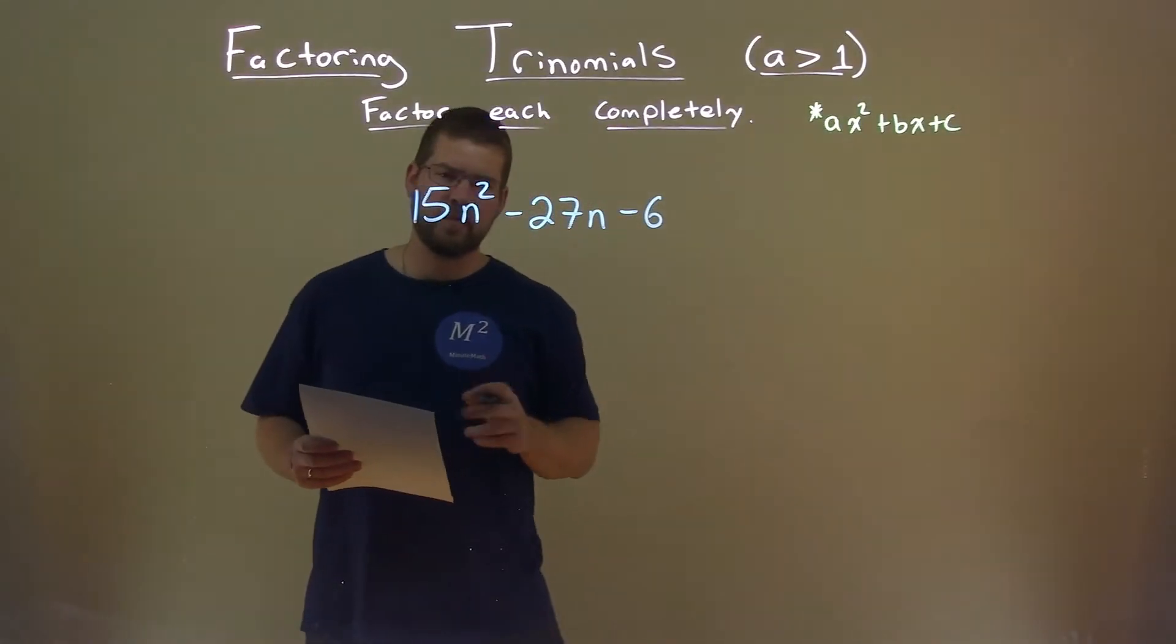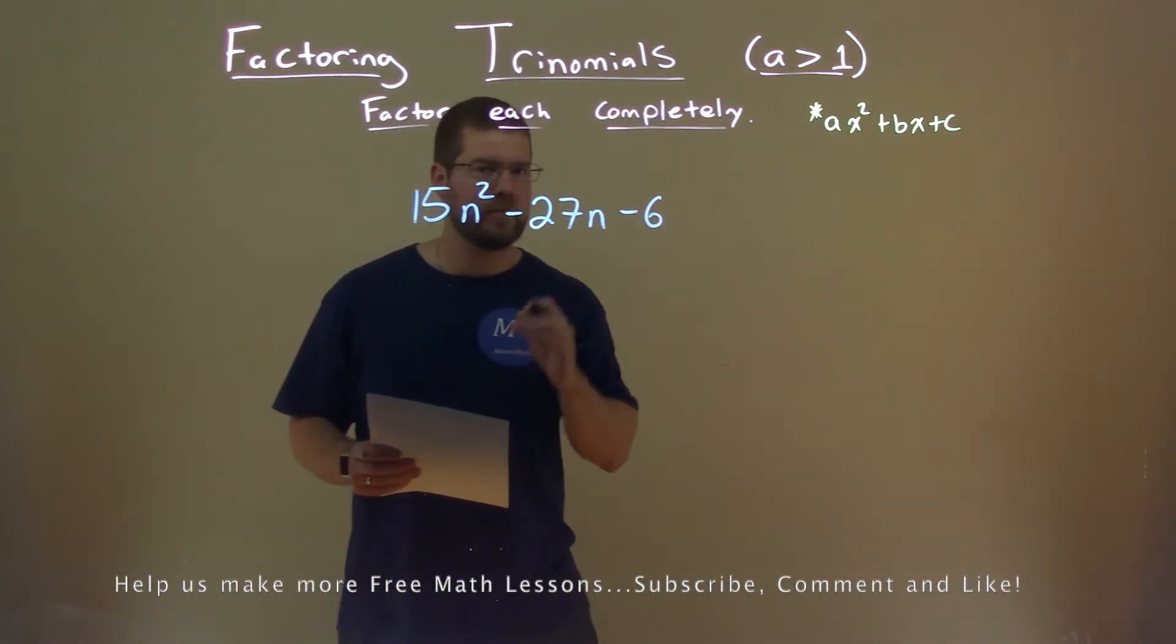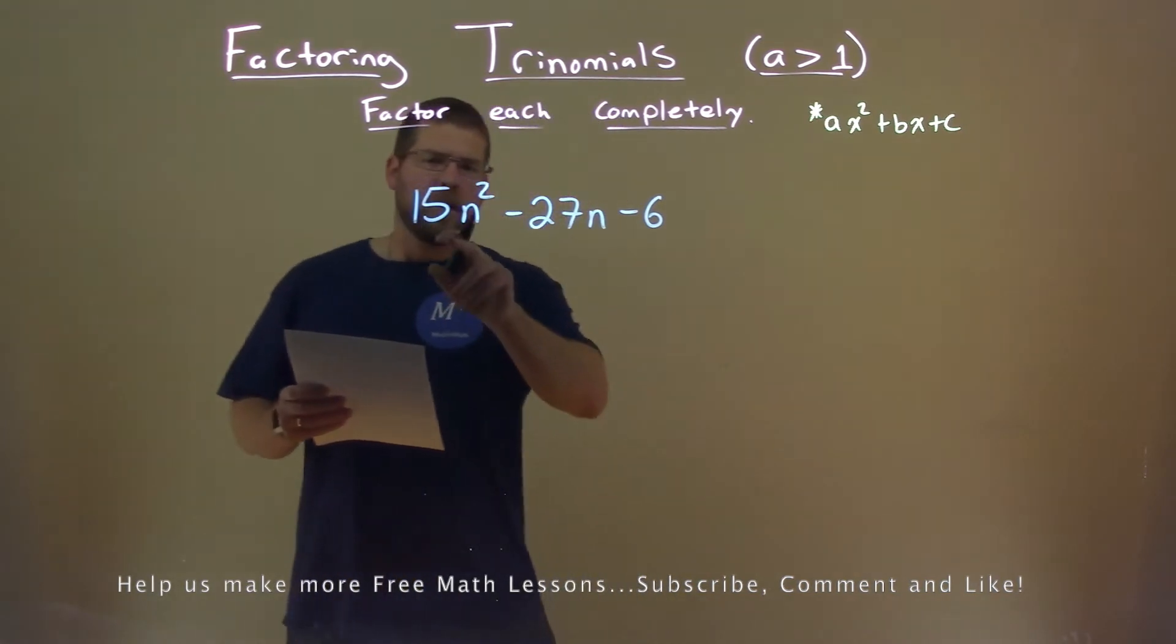We're given this problem here, 15n squared minus 27n minus 6, and we need to factor this completely. So let's look at it.